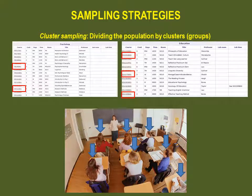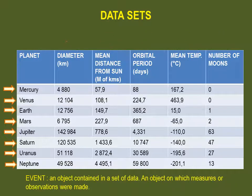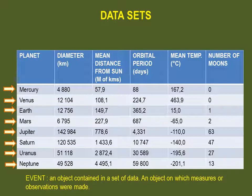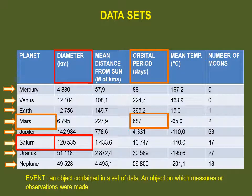Now that we have a sample, we are ready to start taking data. This table shows a dataset on planets in our solar system. Data sets show the different variables measured or observed in the columns, and the objects or elements on which these variables were taken in each of the rows. For example, Saturn's diameter is 120,535 kilometers and Mars' orbital period is 687 days. This structure, with variables on columns and objects on rows, is the conventional way of organizing your data.